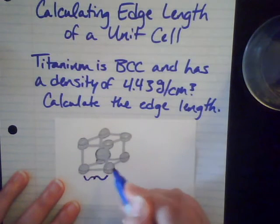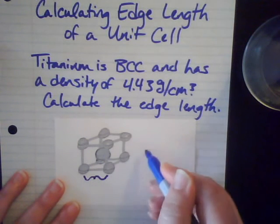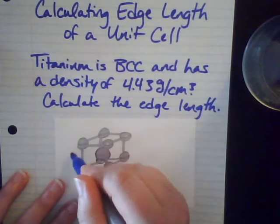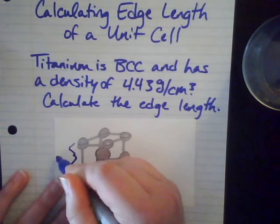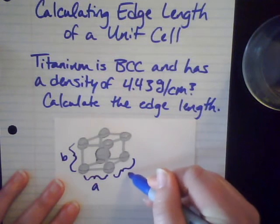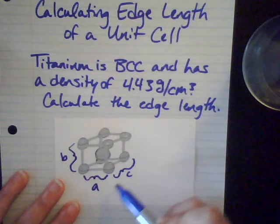So we want to know this distance right here, which is going to be the same as this one, and the same as this one. So if we're doing this in our x, y, z coordinates, then this would be my a, and this would be my b, and then this would be my c.